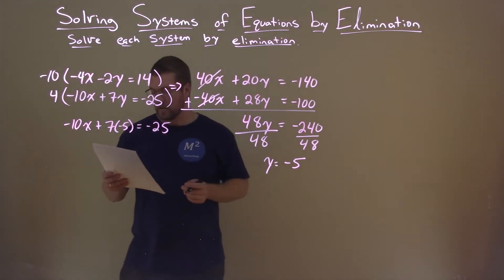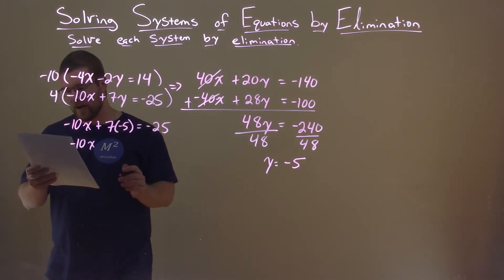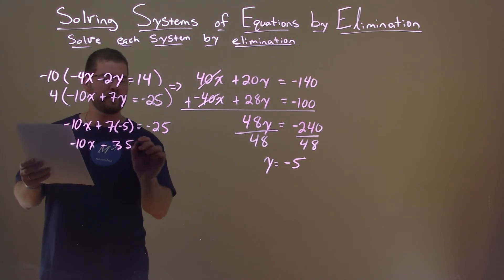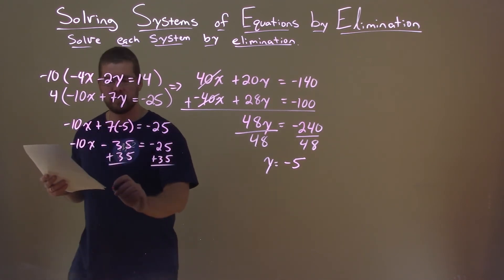Now we're solving for x here. Negative 10x, well, 7 times negative 5 is a minus 35. It equals a minus 25. We add 35 to both sides. Let's keep on this journey to get x by itself.